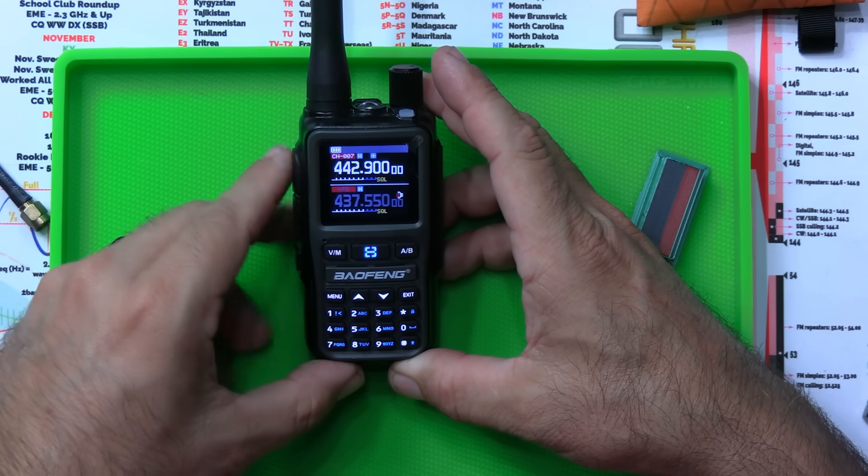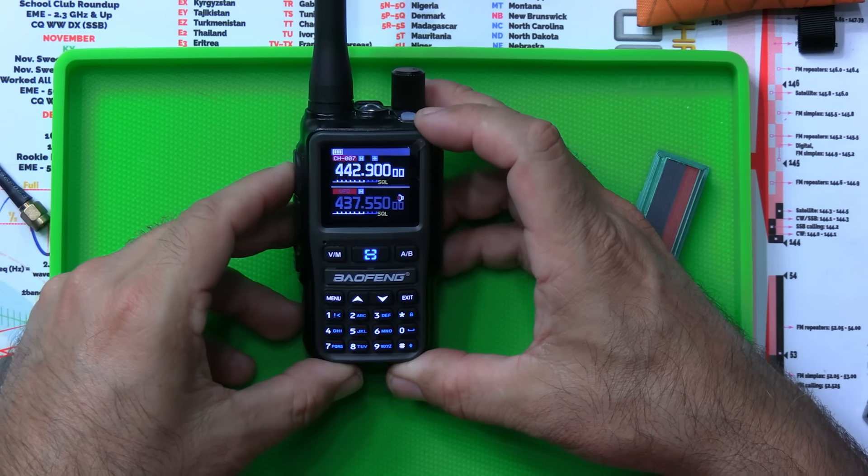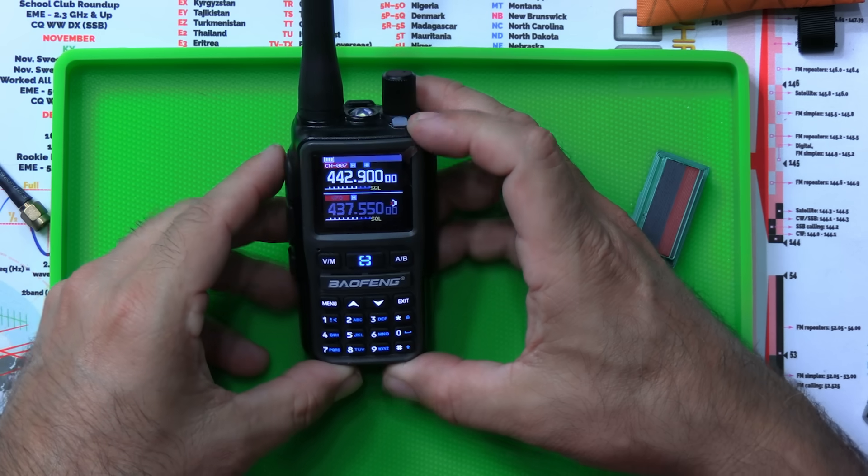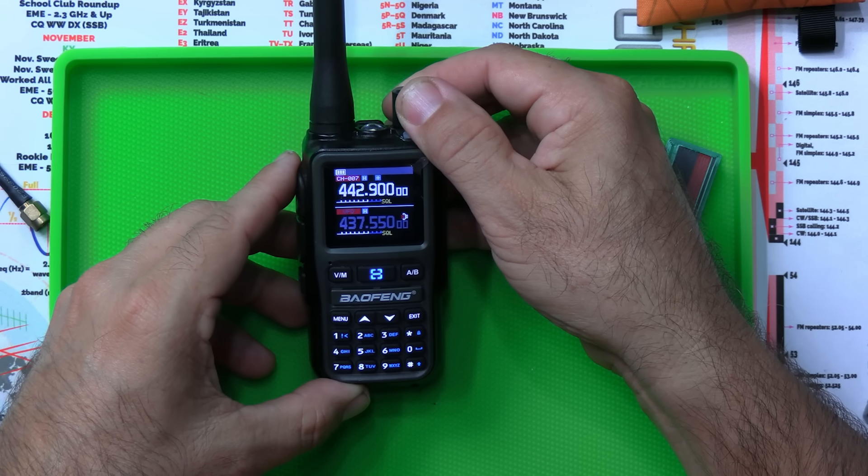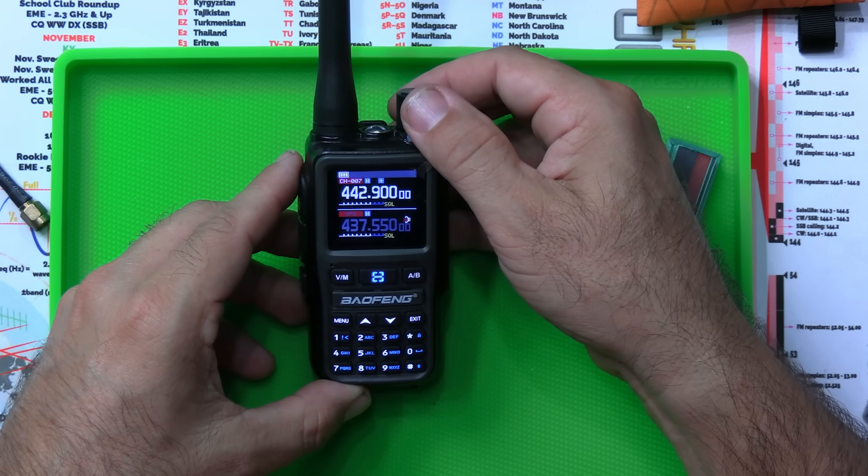So that's the 442.900 ULIS repeater. KC5HWB testing. And that's the ULIS repeater right there.